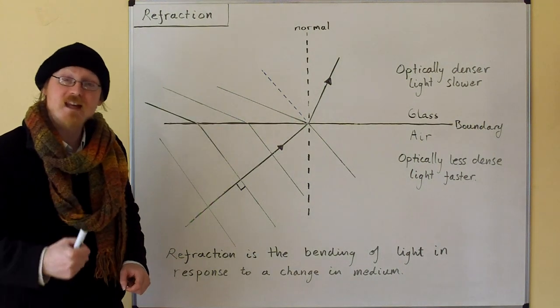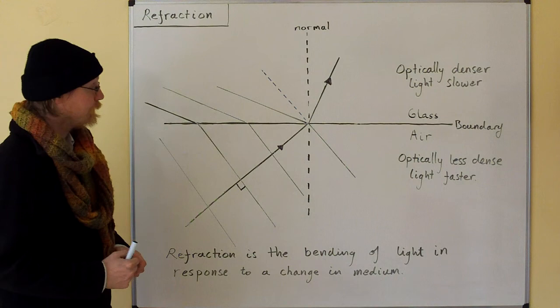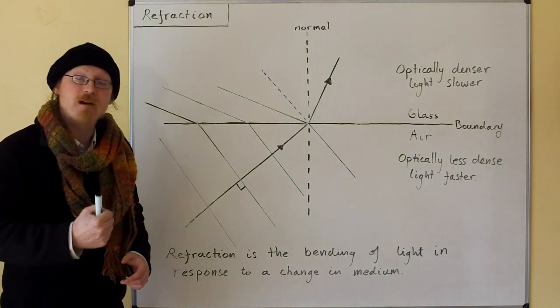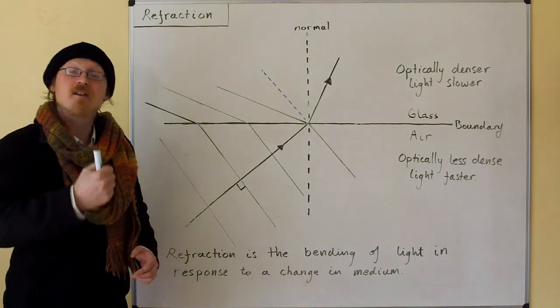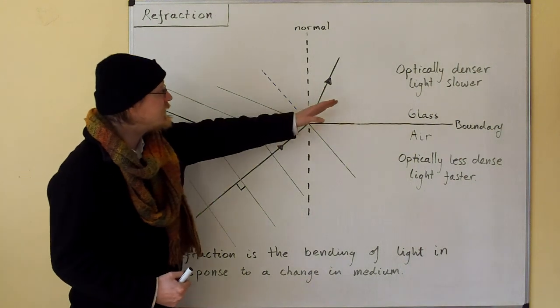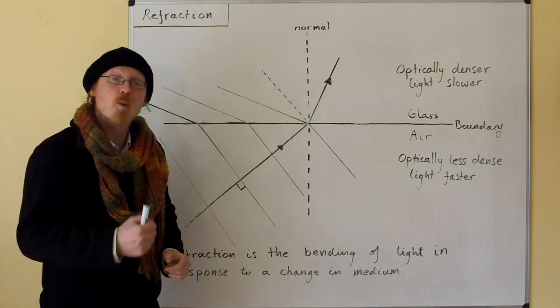Now the new wave direction is at right angles to these new wave fronts, so we see that it is bent towards the normal. Refraction is the bending of light in response to a change in the medium.